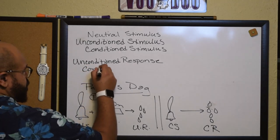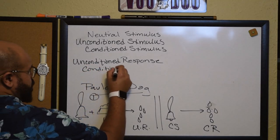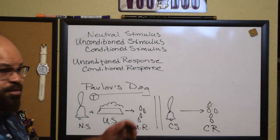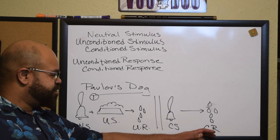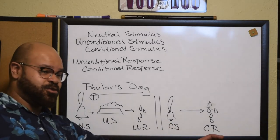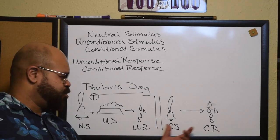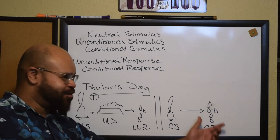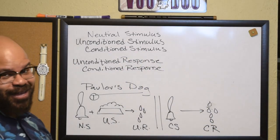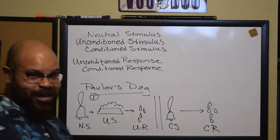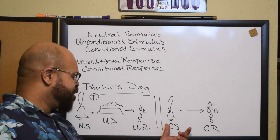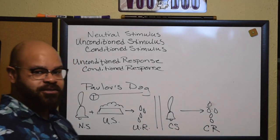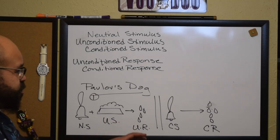When the bell itself — that once-neutral stimulus — causes a response, it's moved from a neutral stimulus to a conditioned stimulus. The dog had to be trained to react to this bell, and the response to the bell we now call the conditioned response, because this response had to be trained into the dog.